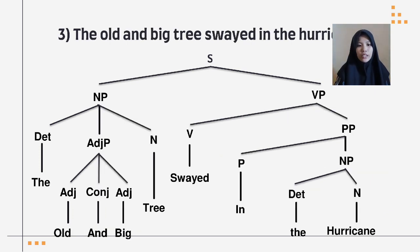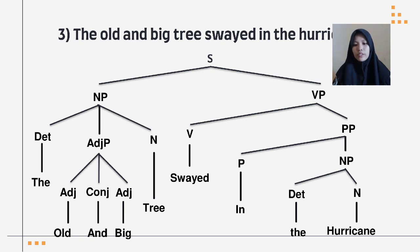Number three: 'The old and big tree swayed in the hurricane.' The sentence is broken into two parts: a noun phrase and a verb phrase. The noun phrase is broken into three parts: a determiner 'the,' an adjective phrase, and a noun. The adjective phrase is broken into three parts: adjective 'old,' conjunction 'and,' and adjective 'big.' The noun is 'tree.' The verb phrase is broken into a verb 'swayed' and a prepositional phrase, which is divided into preposition 'in' and a noun phrase containing determiner 'the' and noun 'hurricane.'